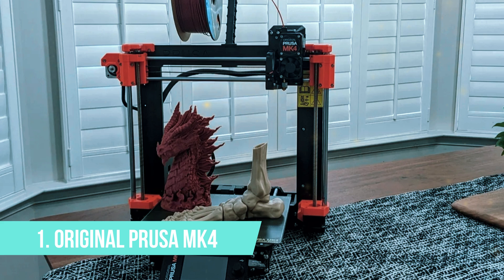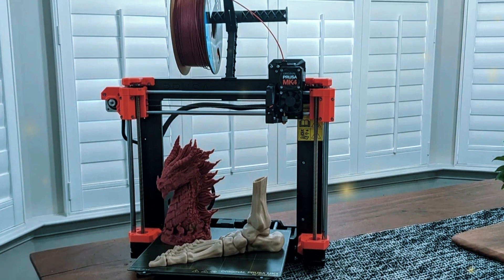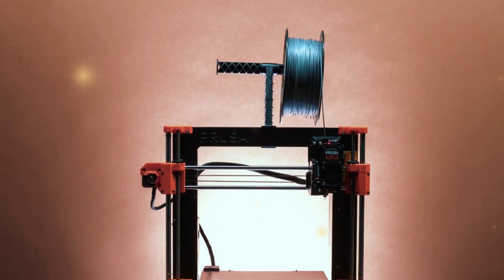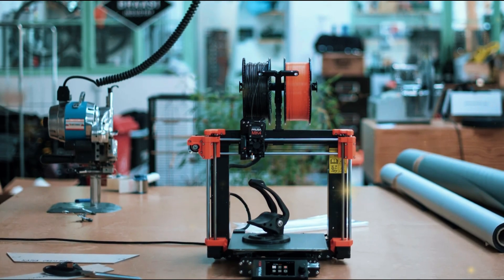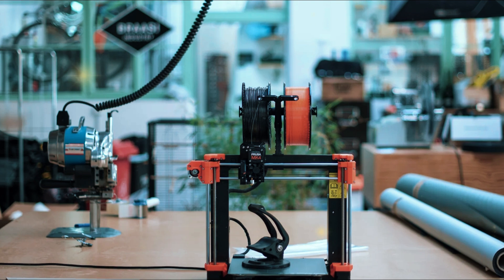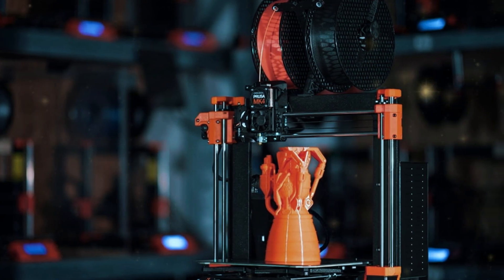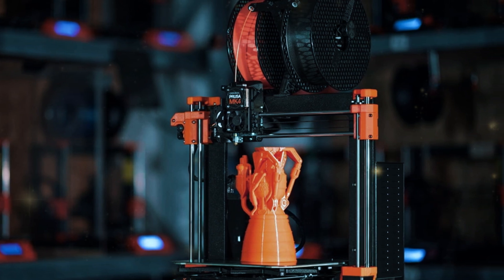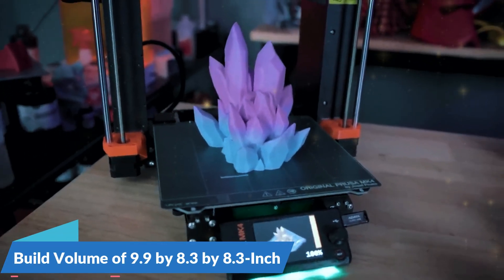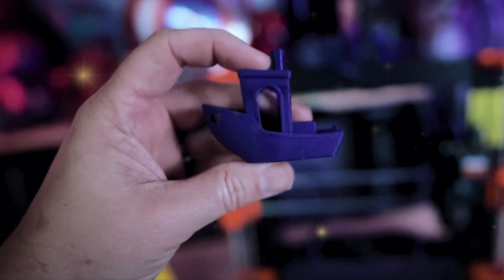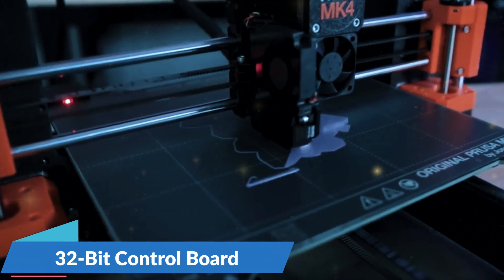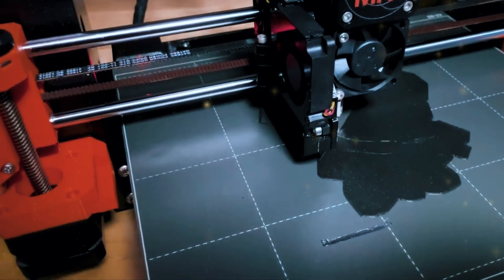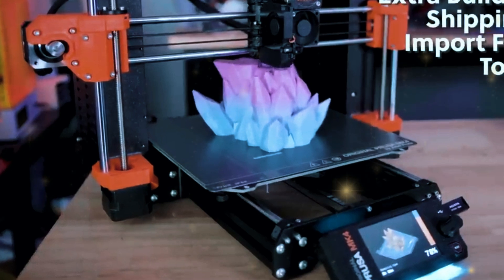Number 1, Original Prusa MK4. Finally at the top of our list is the Original Prusa MK4, a 3D printer that's truly in a league of its own when it comes to quality, precision, and innovation. The Prusa MK4 is the latest in a long line of highly regarded printers from Prusa, and it brings a host of new features that make it stand out as the best 3D printer of 2024. The MK4 offers a 9.9 by 8.3 by 8.3 inch build volume, which is perfect for most printing projects from small detail models to medium-sized functional parts. One of the key features of the Prusa MK4 is its 32-bit control board, which allows for incredibly precise control over the printer's movements, resulting in smoother prints with finer details.